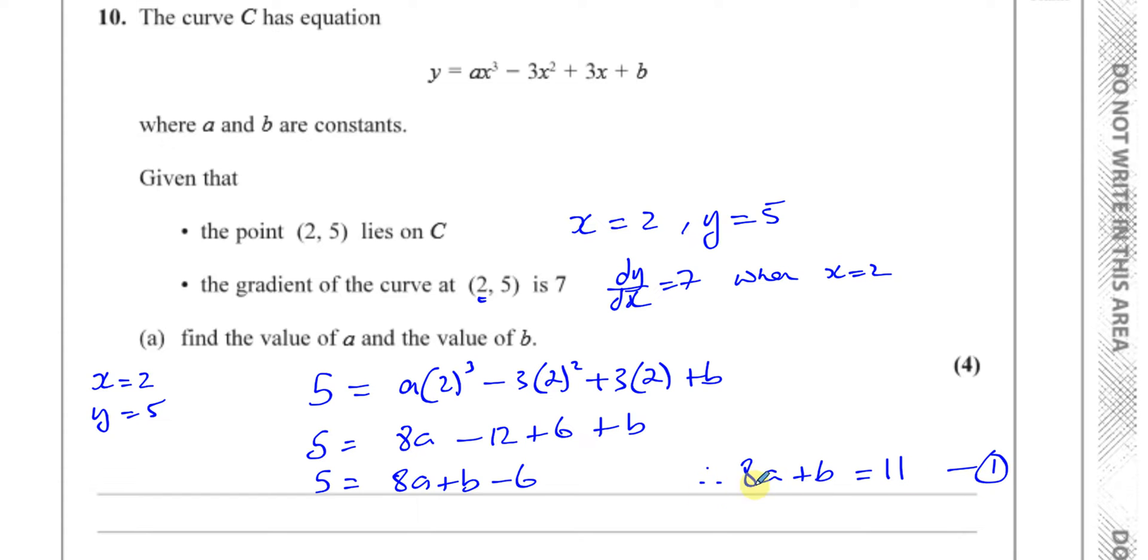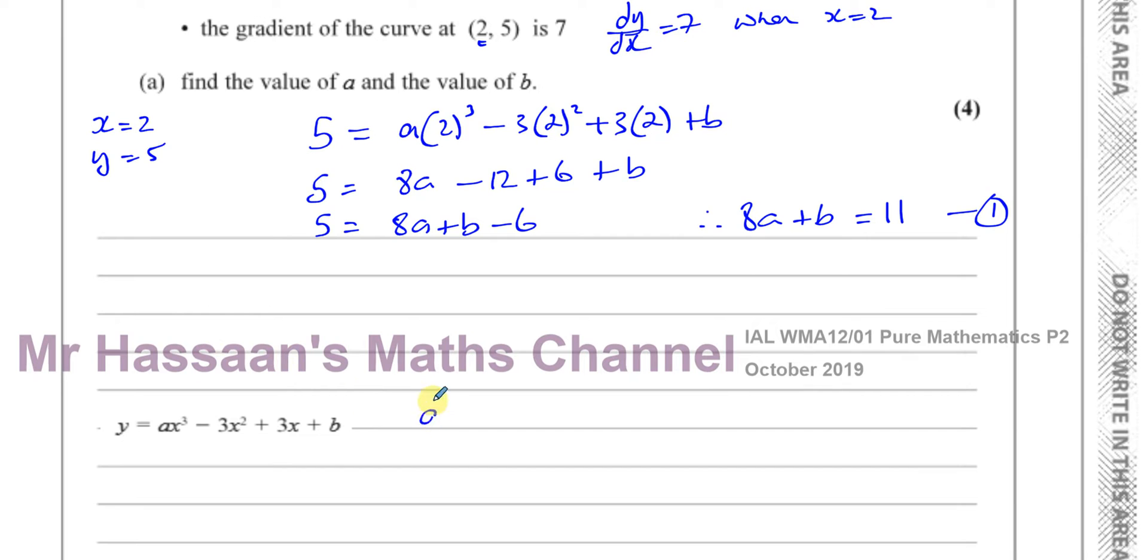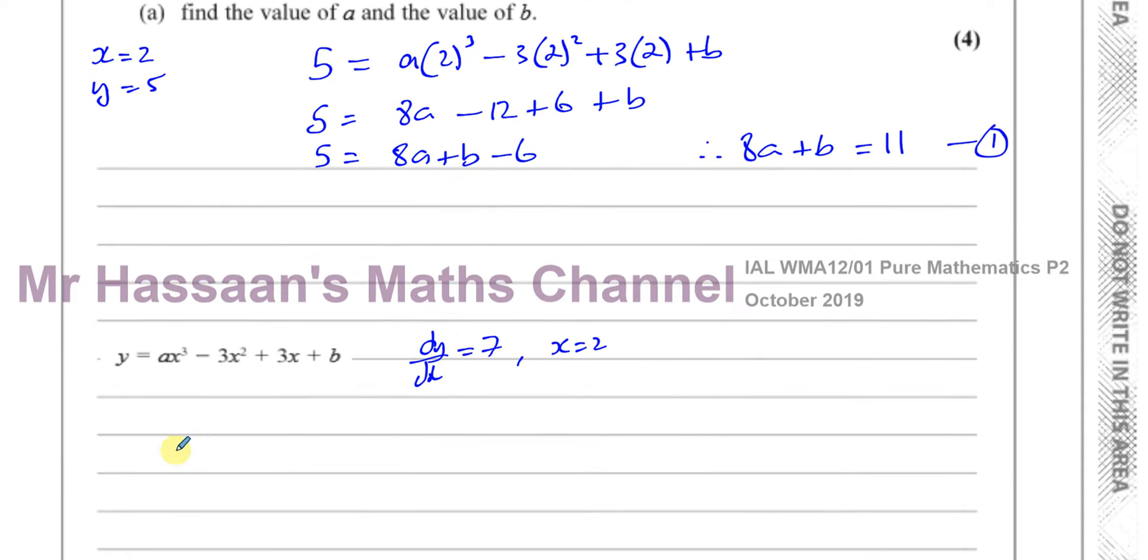We can't really do much else with this since we have two unknowns. So let's go to the other piece of information, where we're told that dy/dx equals 7 when X equals 2. The gradient of this has to be 7 when X equals 2. So let's find what dy/dx is first. Here we have to remember, multiply by the power and take 1 from the power. This is going to give us 3AX squared minus 6X plus 3. And you have a constant, which disappears.